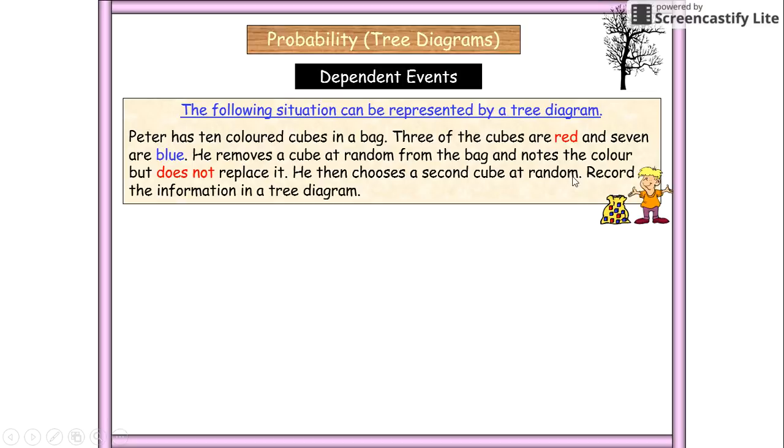He then chooses a second cube at random and records the information. Okay, so we know we've got 10. We know we've got three that are red and then we've got seven that are blue. So we know that's going to be three out of 10 and that's going to be seven out of 10. But let's watch how this goes.